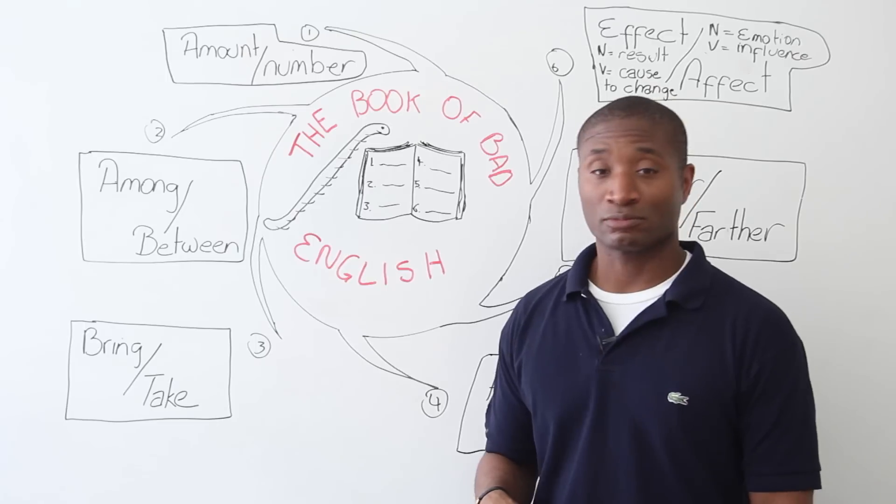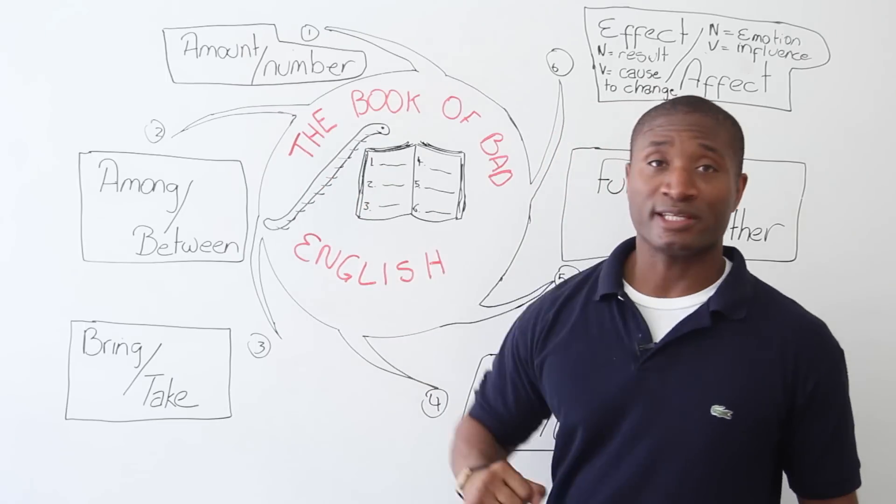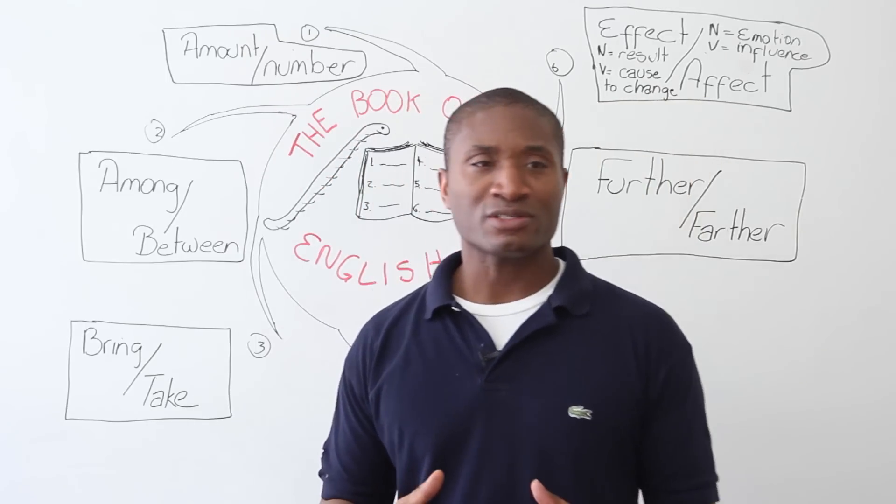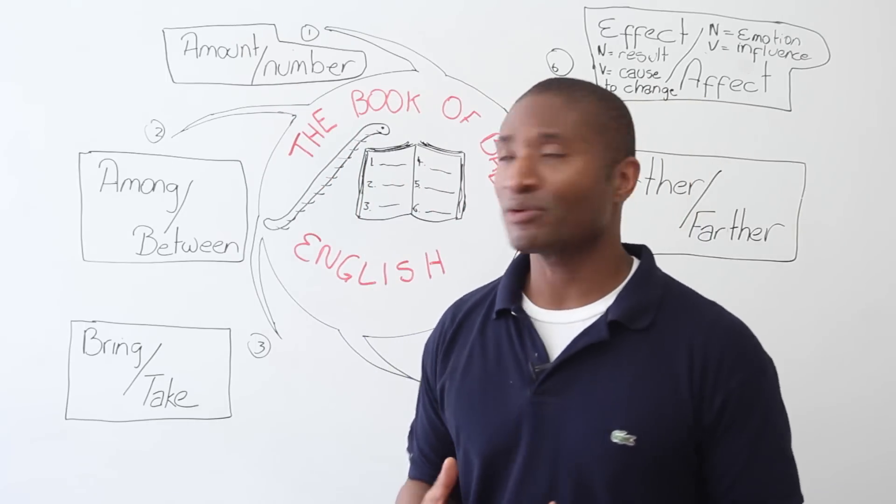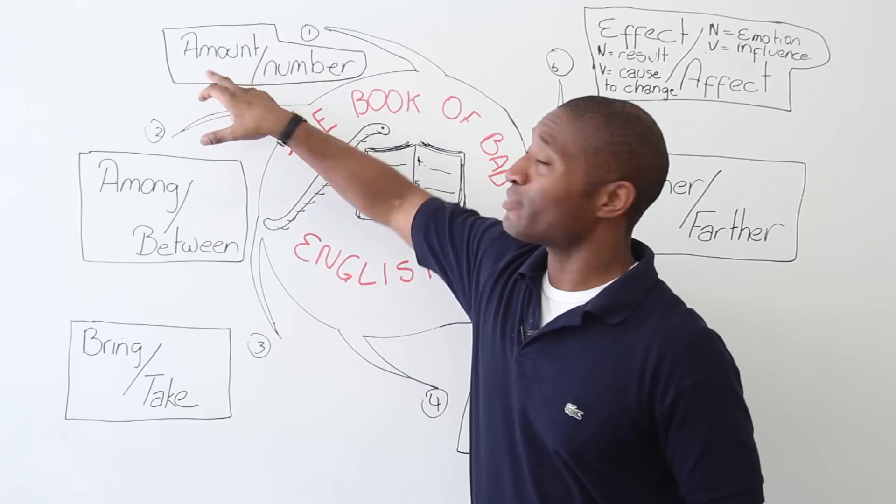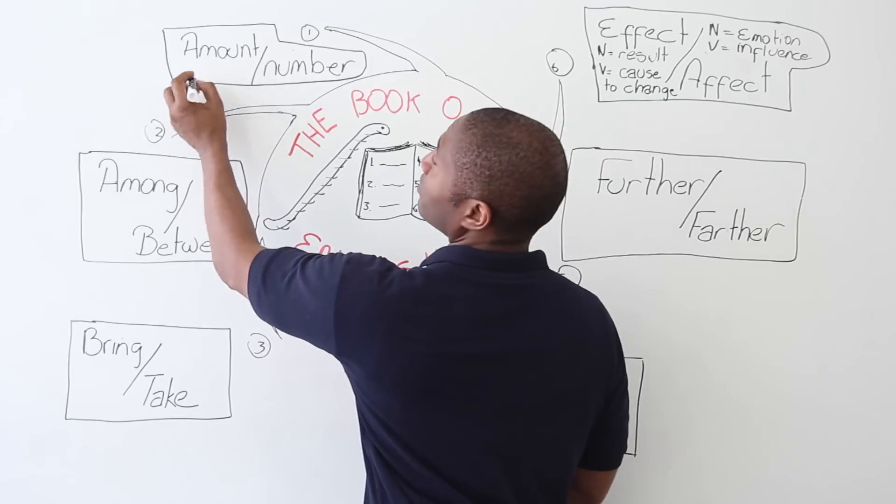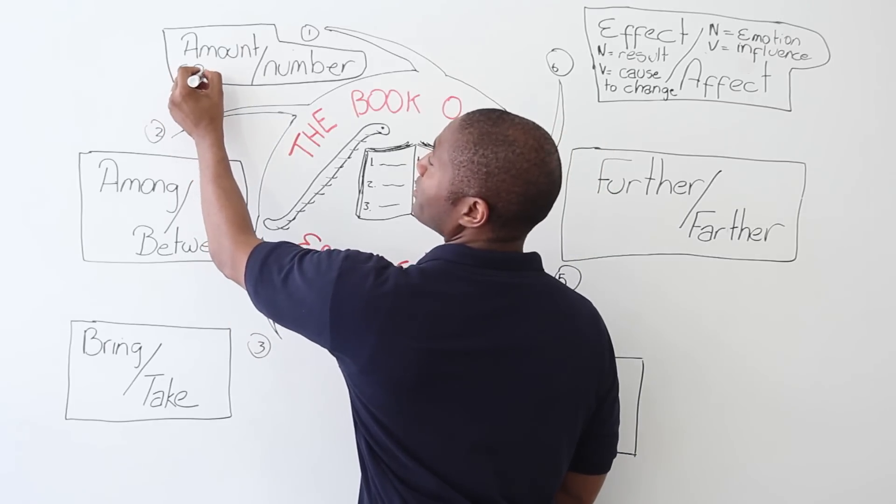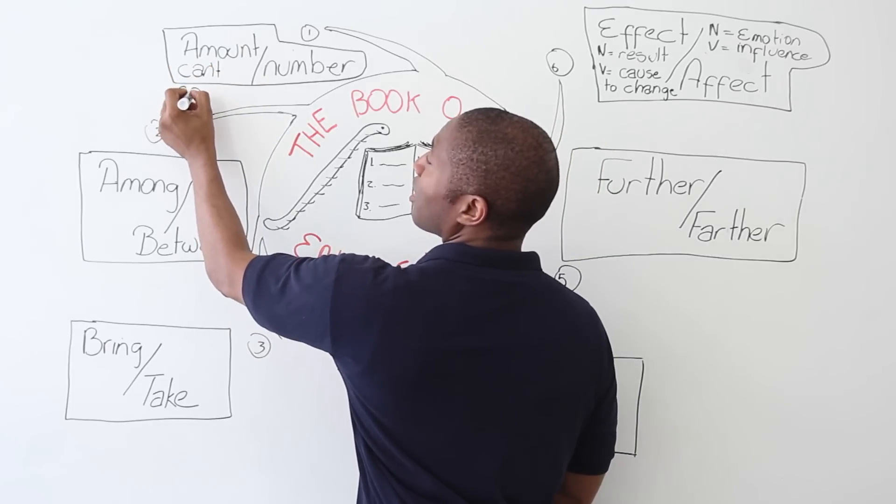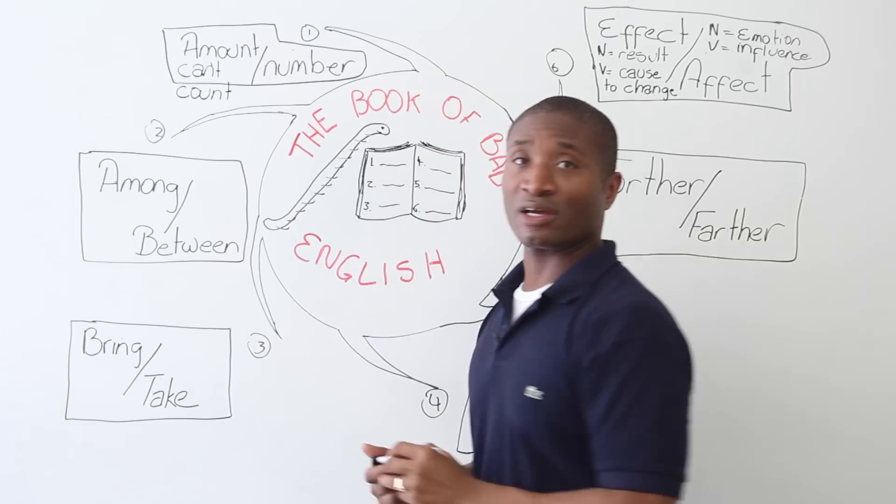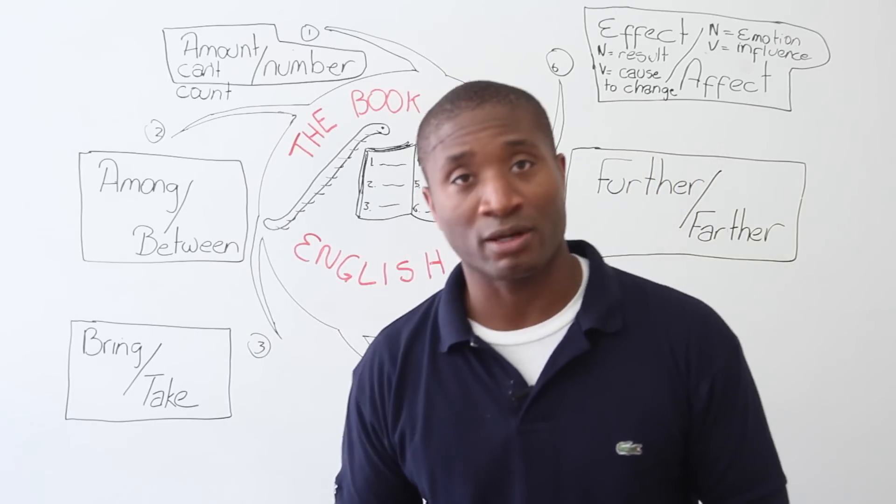Now, let's start with number one, one of my favorites, amount and number. Amount is sort of like how much. A number is, you know, a thing. When we look at amount, you can think of you can't count it. All right? A lot of times when we say an amount, like I have a large amount of water in my house.